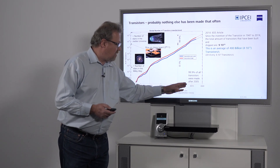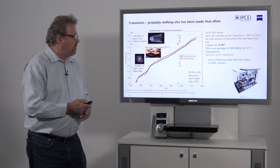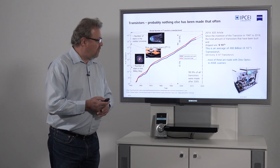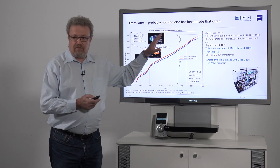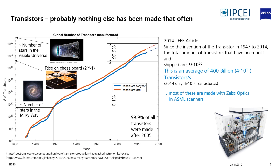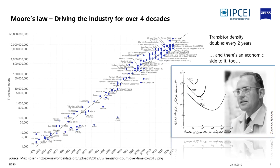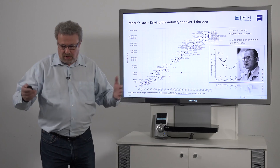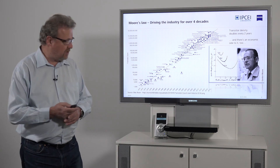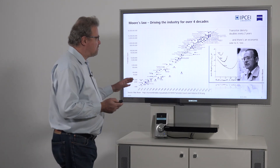Now, in 2005 ASML and Zeiss were already market leaders, so it is fair to say that most of the transistors that have ever been built on this planet have been built with ASML scanners and Zeiss optics from Oberkochen. The motor behind all of this is Moore's Law, which drove the development of all these tools that make many, many transistors in a short amount of time.